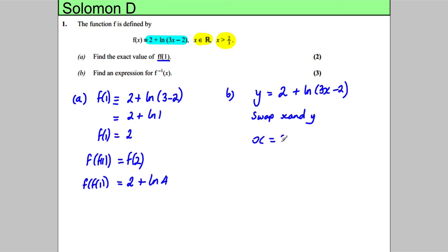So we have x equals 2 plus the natural logarithm of 3y minus 2. If you make y the subject of this formula, that will be your inverse function. So we're going to subtract 2 from both sides: x minus 2 equals ln(3y - 2). Then we're going to take exponentials of both sides.